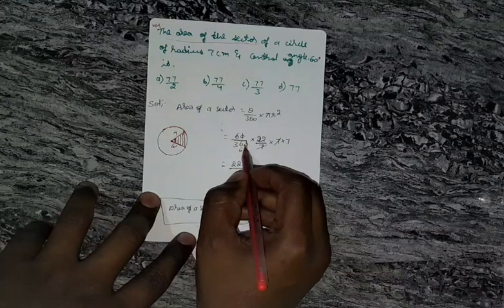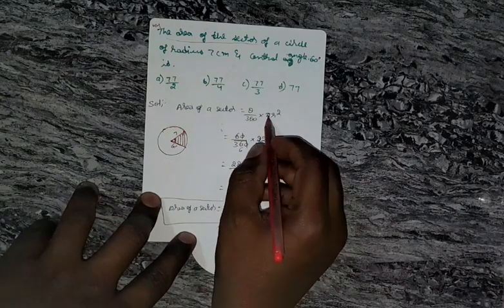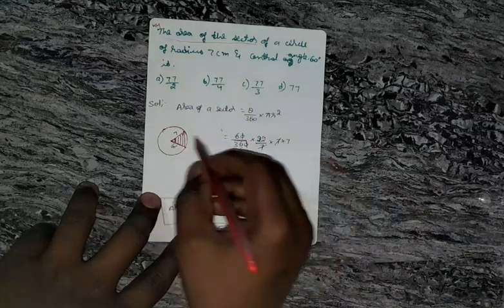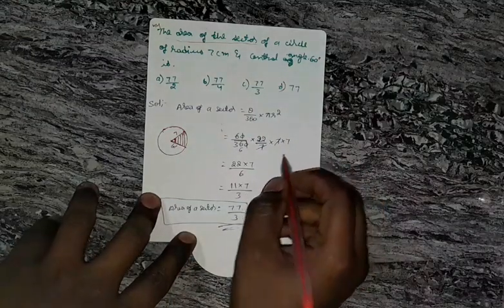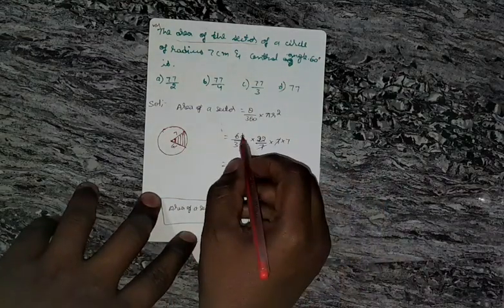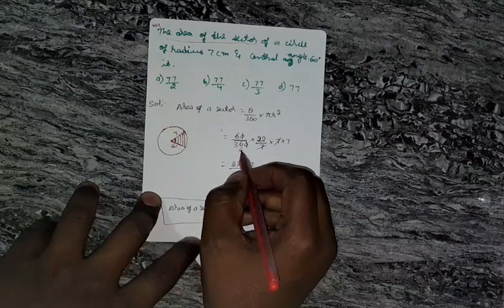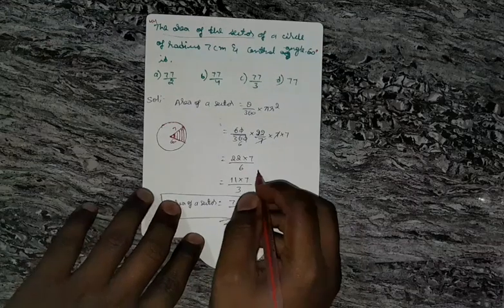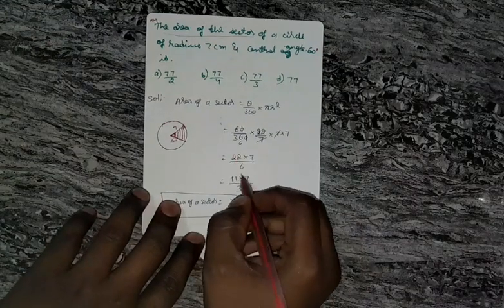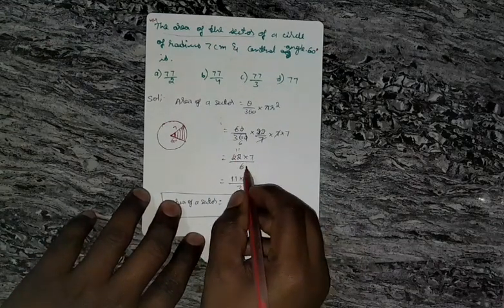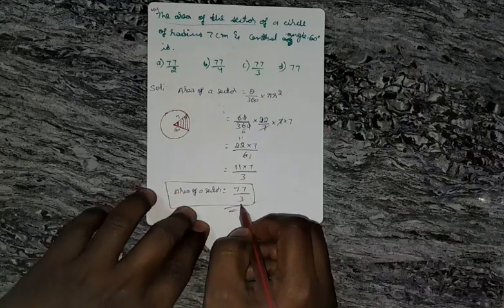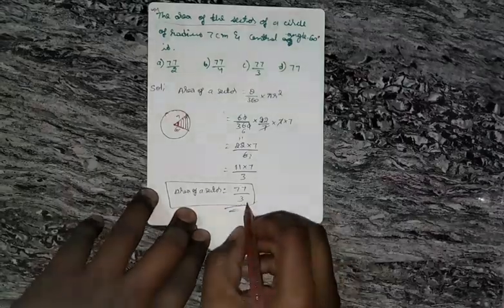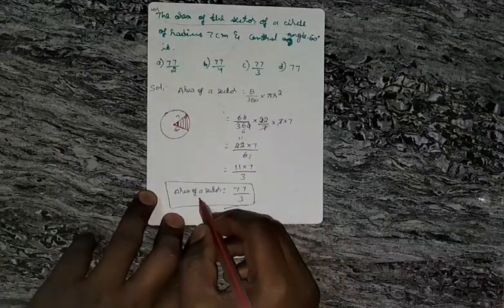Now, 60 degree divided by 360 degree into pi value is 22 by 7 and radius, they are given 7 cm, 7 into 7. Now, 7, 7 get cancelled. Now, 22 times 7 divided by 6. That is, 2 times 11 times 7 divided by 2 times 3. That is, 77 by 3. 77 by 3 is the area of sector.